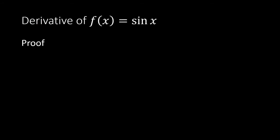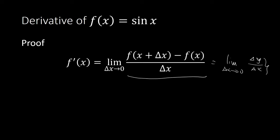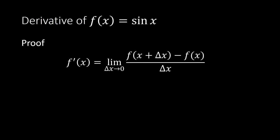So this is the proof. We will use the limit definition of the derivative, dividing our proof into three steps. The limit definition states: f'(x) equals the limit of [f(x + Δx) − f(x)] / Δx as Δx approaches 0. This expression is your change in y over change in x — that is, the slope — and the derivative gives us the instantaneous rate of change.